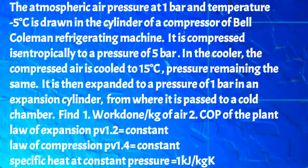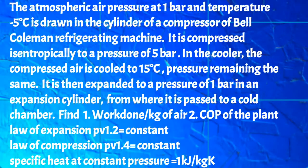The problem states: atmospheric air at pressure 1 bar and temperature minus 5 degree Celsius is drawn into the cylinder of the compressor of a Bell-Coleman refrigerating machine. It is compressed isentropically to a pressure of 5 bar. In the cooler, the compressed air is cooled to 15 degree Celsius at constant pressure. It is then expanded to 1 bar in an expansion cylinder, from where it is passed to the cold chamber.